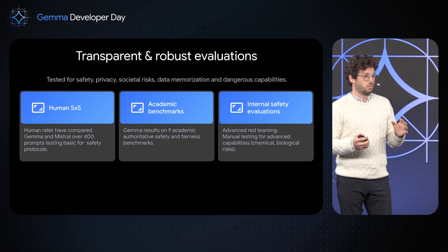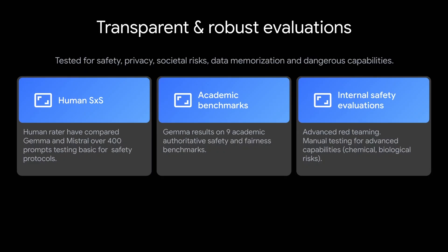That leads to the second pillar: robust and transparent evaluation. Gemma is tested for safety, but also for privacy, societal risk, data memorization, as well as other dangerous capabilities. We've compared Gemma with other existing models specifically for safety, and we've run the largest number of academic benchmarks on safety and sociocultural risk to make sure that Gemma is safe for your application. The results are all in our transparency report — I encourage you to check them out, it's all available online.